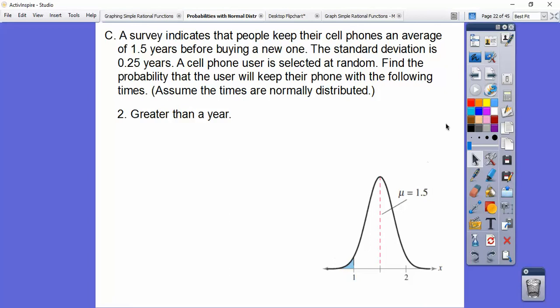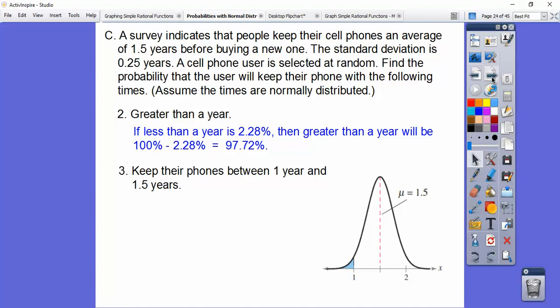So greater than a year would be the other side, so it's going to be 1 minus that. Or since we're talking about percents, it's 100% minus 2.28%, so about 97.72% of the people will have their phone for more than a year.